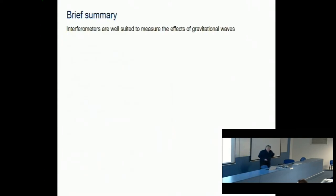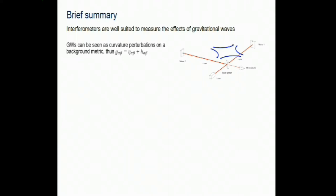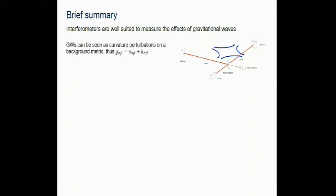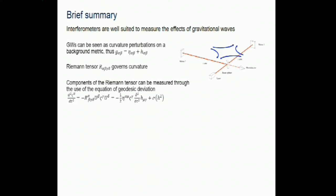First, a brief summary of what we tried to do yesterday. I tried to convince you that interferometers are well suited to measure the effects of gravitational waves. Gravitational waves can be seen as perturbations in curvature. We took the metric — the central object we talk about — said you have a background metric, in this case Minkowski. Then there are these gravitational wave perturbations H_alpha_beta which are small. The Riemann tensor governs more or less everything going on; it determines the curvature. Gravitational waves are curvature perturbations, so that is clearly important. It was Pirani who first stated that you can measure these components of the Riemann tensor.